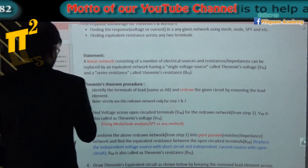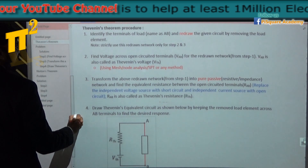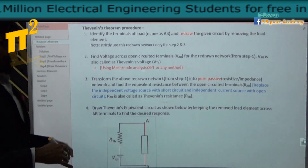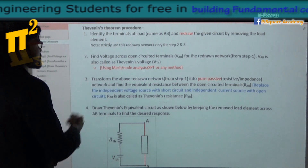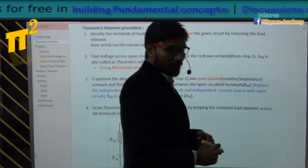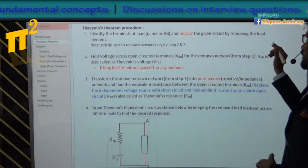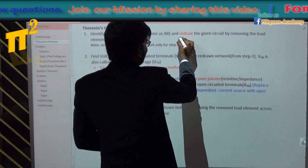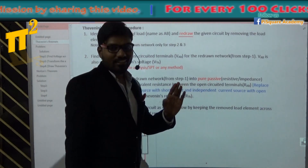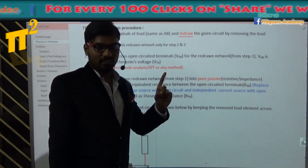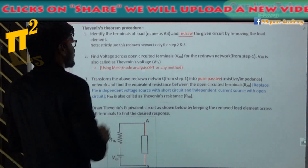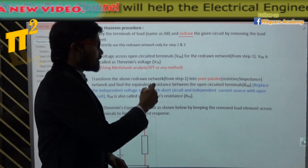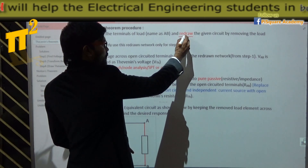So how do you solve a network using Thevenin's? Here is a standard procedure. First: identify the terminals of the load, name them A and B, and redraw the network by removing the load element. The most important thing which many of you miss is redrawing — you must redraw the network. In step 2 and step 3, you should use only this redrawn network.